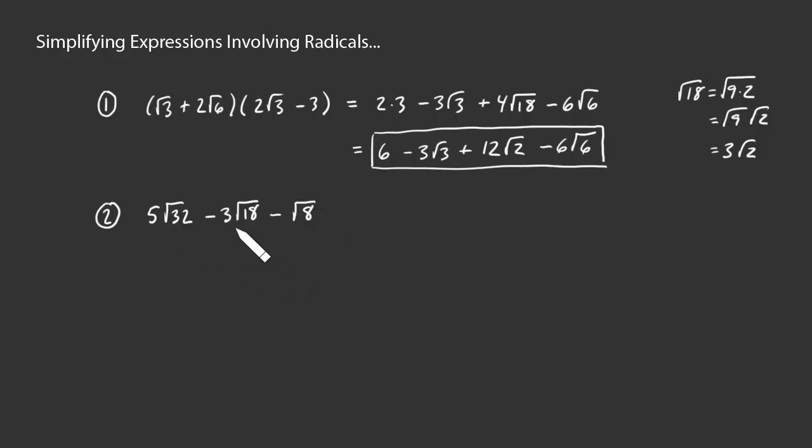Well, looking at the 3 radicals, we might be able to reduce those down a little bit. The square root of 32, remember that's 2 to the 5th under a square root. So, we could say that's equal to 5 times the square root of 2 to the 5th. 18, we saw over here, was the square root of 9 times 2. And the square root of 8, that's the square root of 2 cubed. So, all we did was just factor those three things under the radical sign.